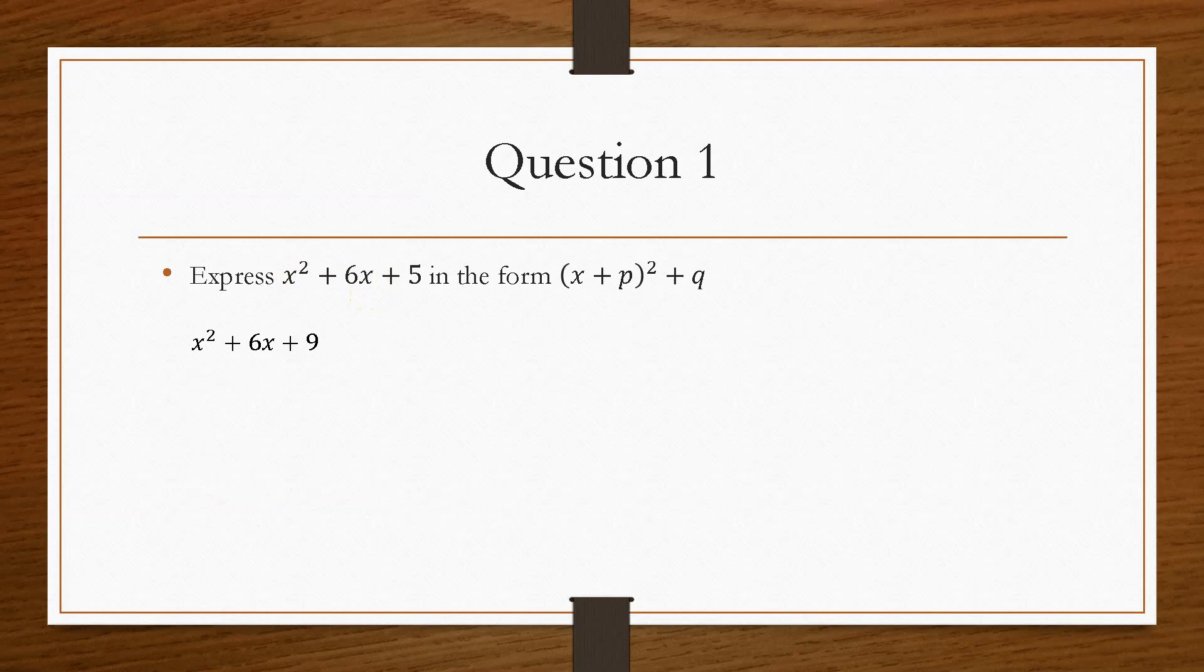And then finally, the value of q can then be found by taking the original value and minus it from the new value. Now, we haven't used the 5 yet, so this is where the 5 comes into play.